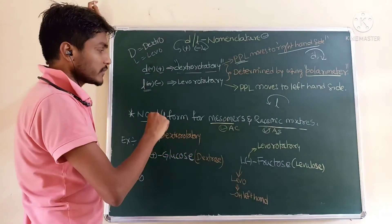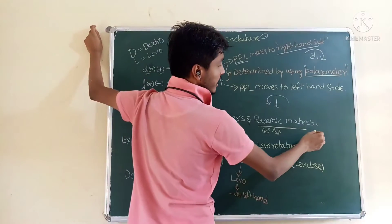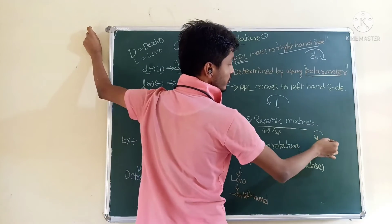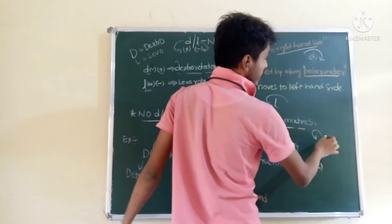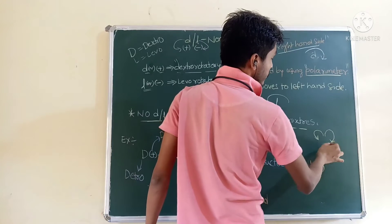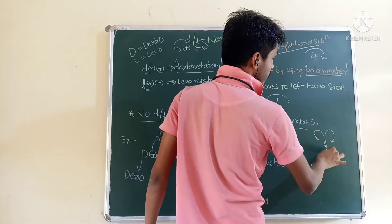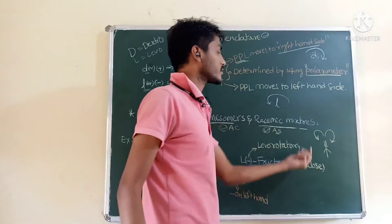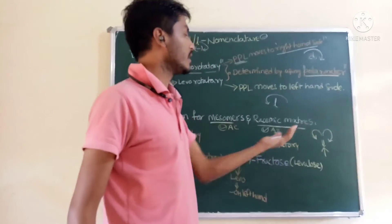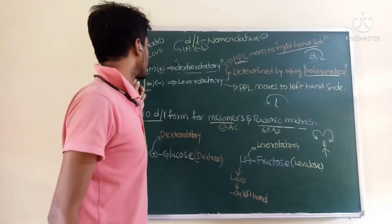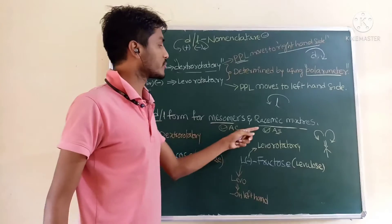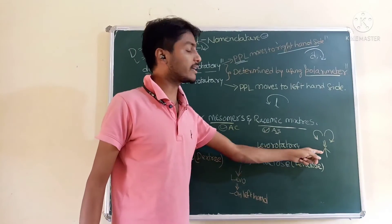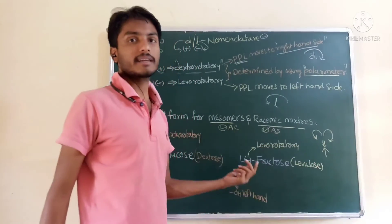Because in meso isomers and racemic mixtures, there is a component that rotates plane polarized light to the right and another to the left, and they neutralize each other — the light will not move on either side. Both small d and small l are present in one compound, so the light does not move in any direction.